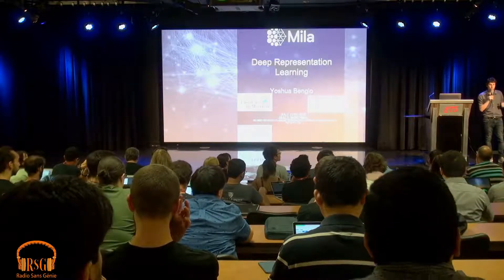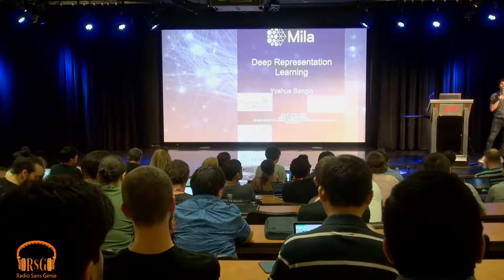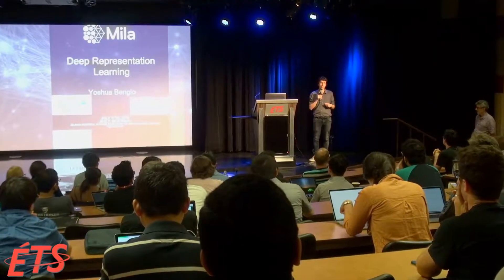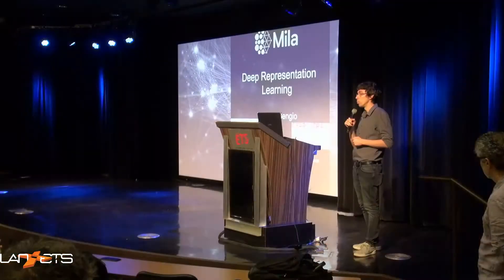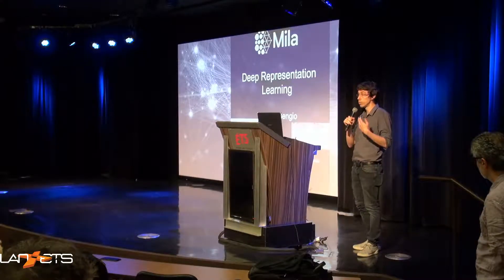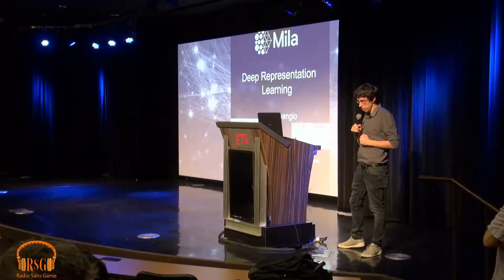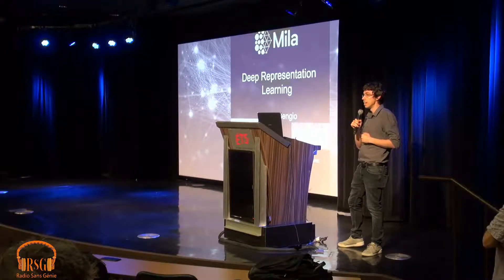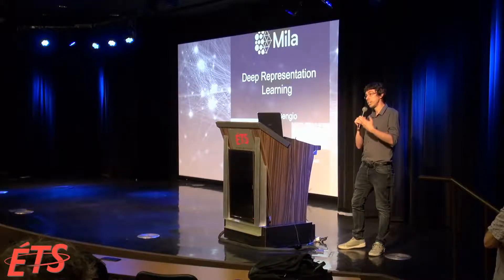It's a great pleasure to have you here, Yoshua Bengio. As you probably know, Yoshua is one of the pioneers of deep learning. He is a professor at the Université de Montréal and founder and scientific director of Mila, which is the largest academic lab working on deep learning. Yoshua received many awards in his career, and very recently the Turing Award, which is considered the Nobel Prize for computing. So it's really a great pleasure to have Yoshua here, giving a keynote on deep representation learning.